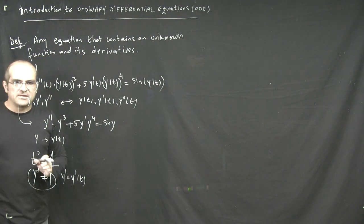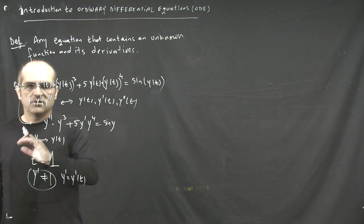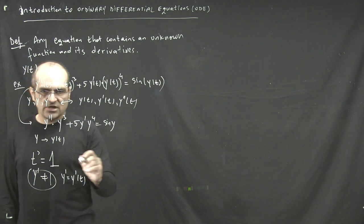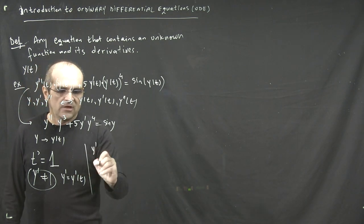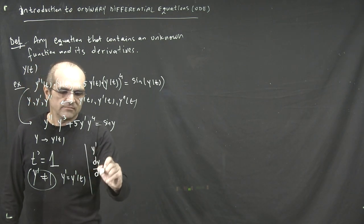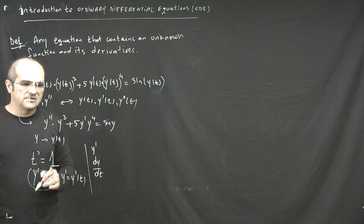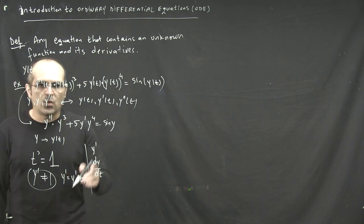So keep in mind this conventional notation, because from now on we're going to just use either the prime notation for the derivative or dy/dt, which is much clearer that it stands for the derivative of y with respect to t.